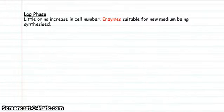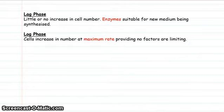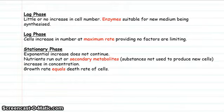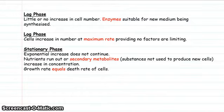In the lag phase, there is little or no increase in cell number because the microbes are synthesizing the enzymes required to break down the growth medium. Next comes the log phase, where cells are increasing in number at a maximum rate, providing no factors are limiting. Then comes the stationary phase, where the exponential increase doesn't continue — nutrients begin to run out, and secondary metabolites, which are substances not required to make new cells, start to increase, such as antibiotics in fungi like penicillium. The growth rate equals the death rate during this phase.